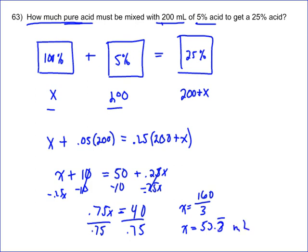So the amount of pure acid you need to add to that 200 milliliters of 5% acid is 53.3 repeating milliliters. And you should leave your answer exact unless it asks you to round.